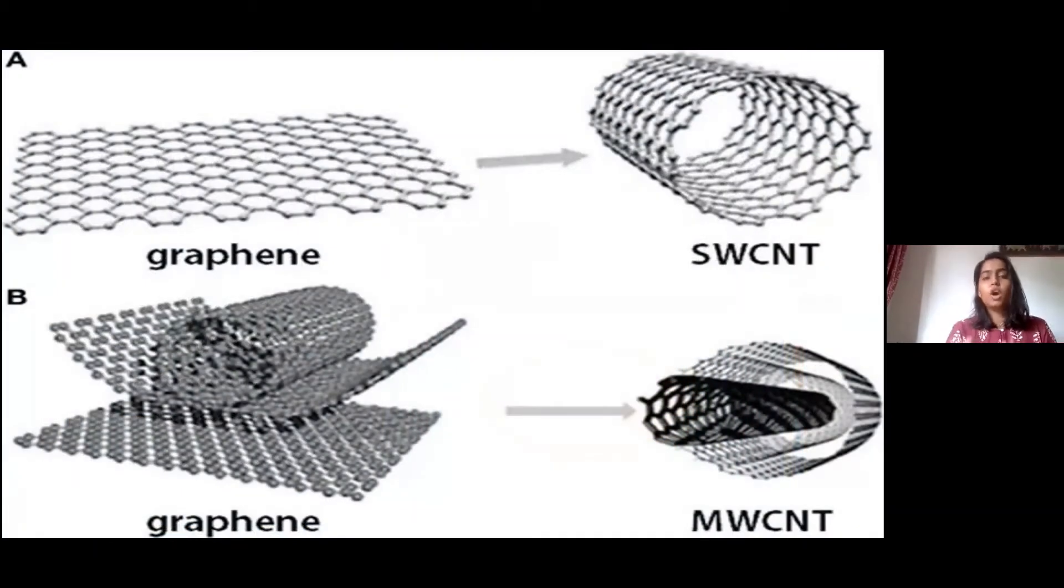Carbon nanotube radio can be single wall or multi wall. Usually for this experiment we use a multi wall carbon nanotube.